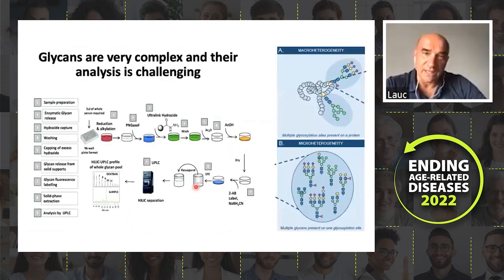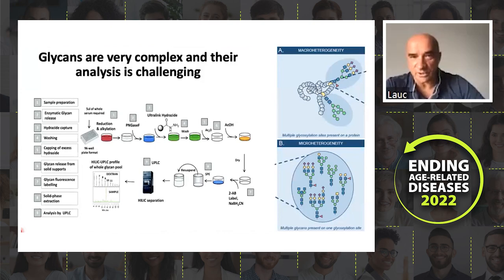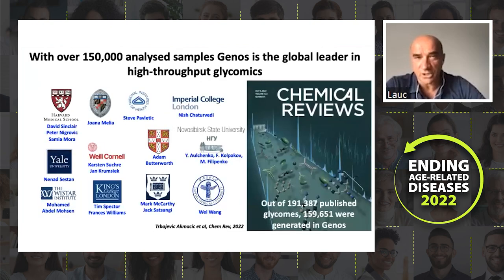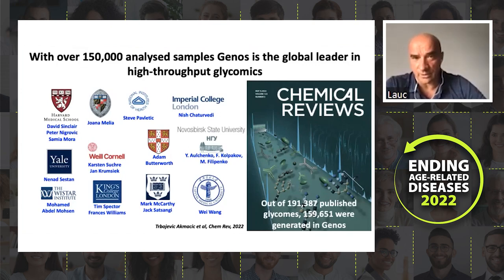Unfortunately, glycans are chemically very complicated. Many different glycan structures can be attached to different glycosylation sites, and not so many people study glycans — especially not in high throughput — because it does require a lot of technical expertise. We went first in that direction and studied our first large cohort nearly 15 years ago.